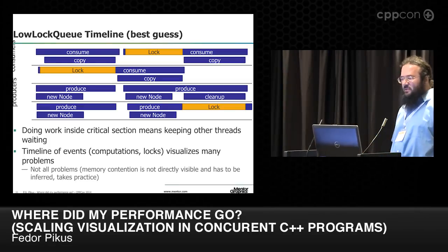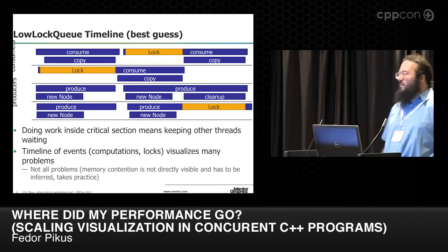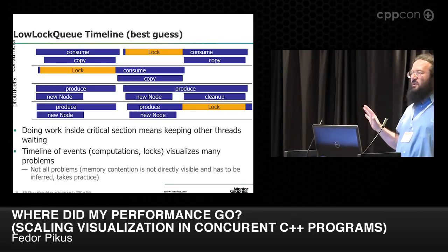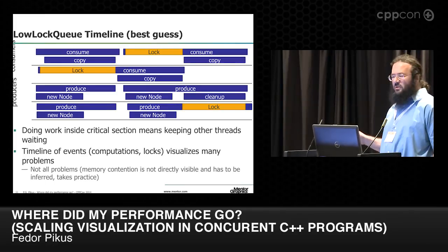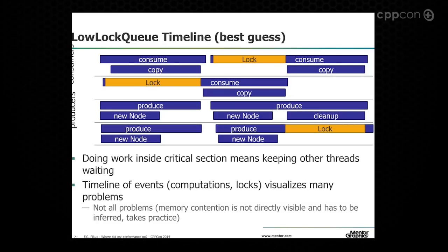Timelines like this make a lot of problems obvious. I've shown you four different types of problems with concurrent programs: memory contention, doing too much work in a critical section, lock contention, and serialization. Not all problems are directly visible — memory contention, for example, is not directly visible. You have to learn to interpret the timelines. Once you do, it becomes very useful.